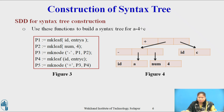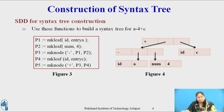After two more steps, p5 is left pointing to the root. The sequence of function calls is: p1 = makeleaf(id, entry_a); p2 = makeleaf(num, 4); p3 = makenode(minus, p1, p2); p4 = makeleaf(id, entry_c); p5 = makenode(plus, p3, p4).